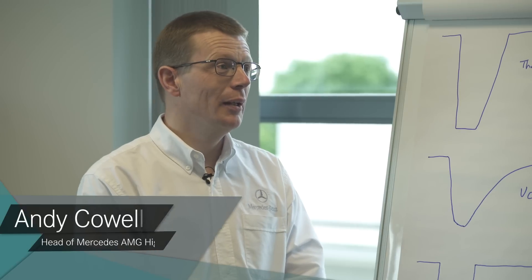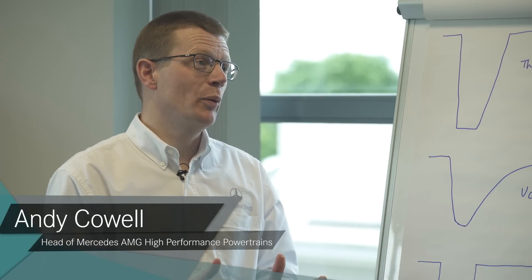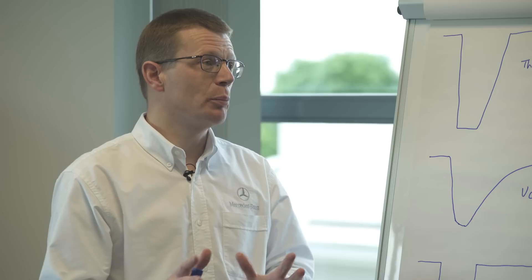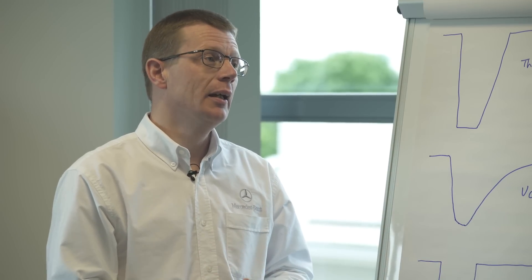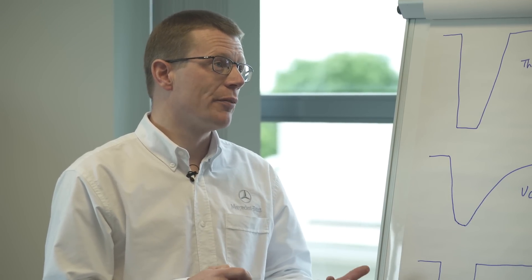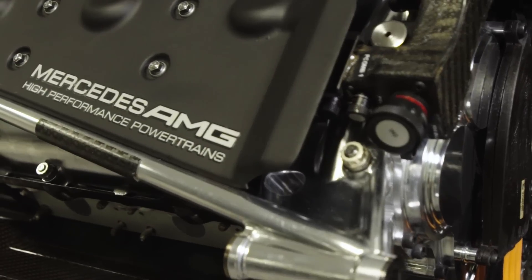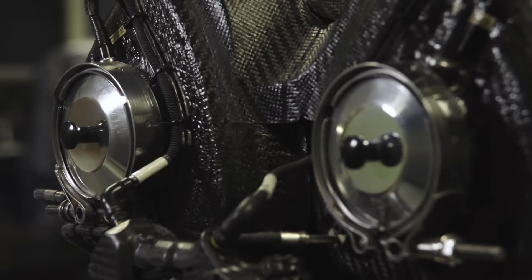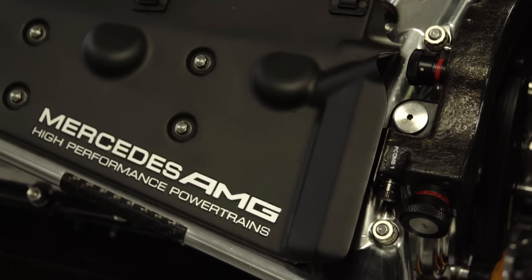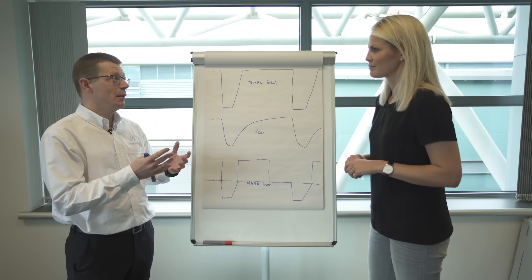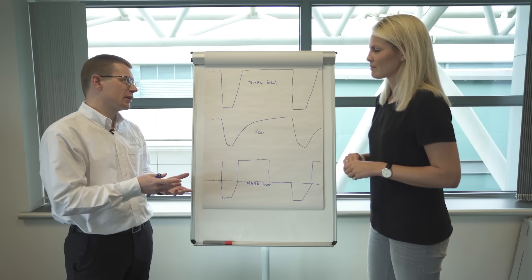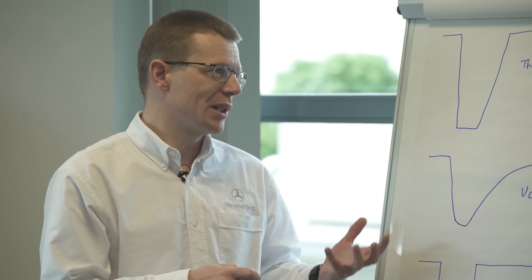I can have a go. So a derate is when we reduce the power of the total power unit, and specifically when the MGUK turns off. The power unit is made up of the V6 internal combustion engine and the MGUK. Together it's about 900 horsepower. The MGUK contributes 160 horsepower of that, so the engine at 740.